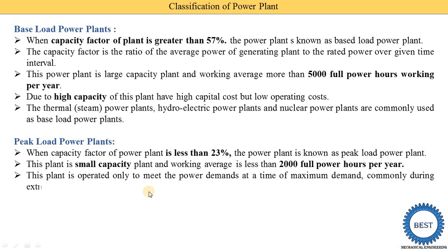This plant is operated only to meet peak power demand at times of maximum demand, commonly during extreme summers and extreme winters. For example, in India during summer, everyone uses air conditioning, which increases the load on the power plant beyond the average supply capacity. At that point, peak load power plants, which are designed specifically for peak demand, are started.